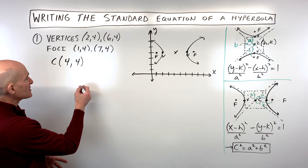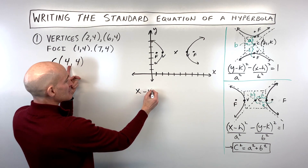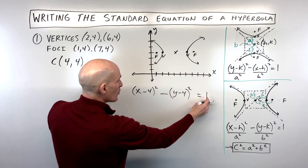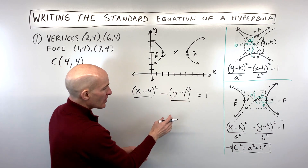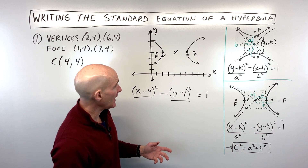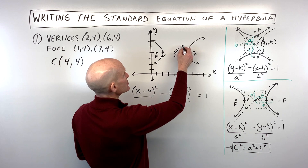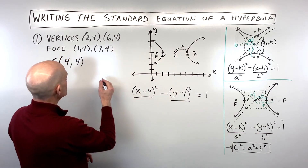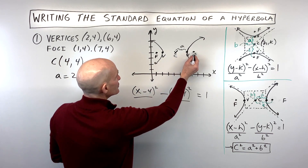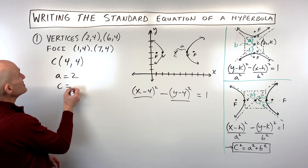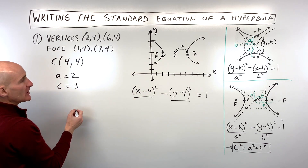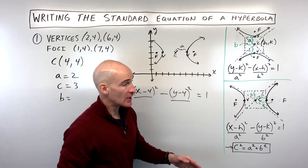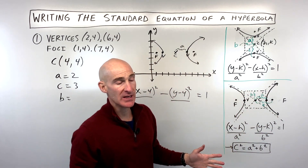I like to piece the equation together as I go. I know it's going to be (x minus the x-coordinate of the center) squared over a² minus (y minus the y-coordinate of the center) squared over b² equals 1. The value a is the distance from the center to the vertex — from (4,4) to (6,4) that's 2 units, so a = 2. The value c is the distance from the center to the foci — from (4,4) to (7,4) that's 3, so c = 3.